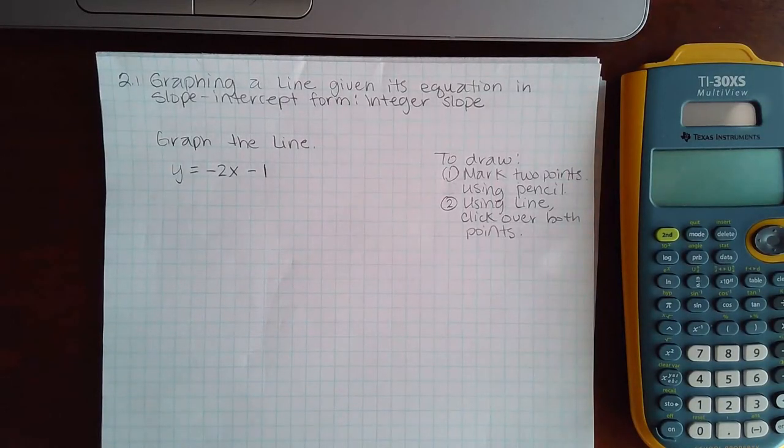This topic is 2.1: graphing a line given its equation in slope-intercept form. We'll have an integer slope for this particular topic.